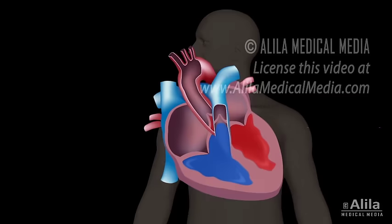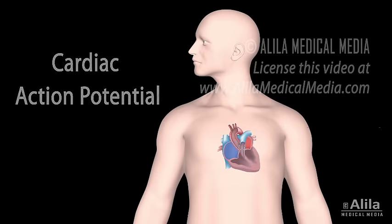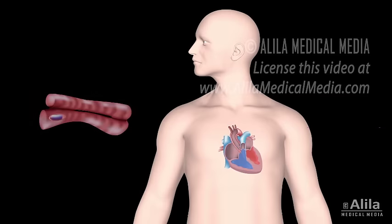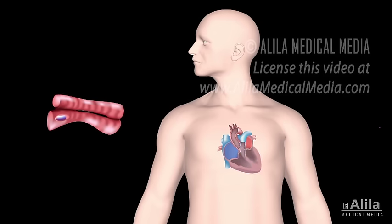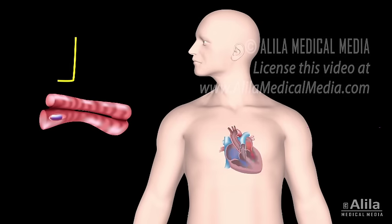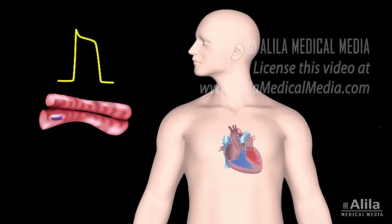The heart is essentially a muscle that contracts and pumps blood. It consists of specialized muscle cells called cardiac myocytes. The contraction of these cells is initiated by electrical impulses known as action potentials.